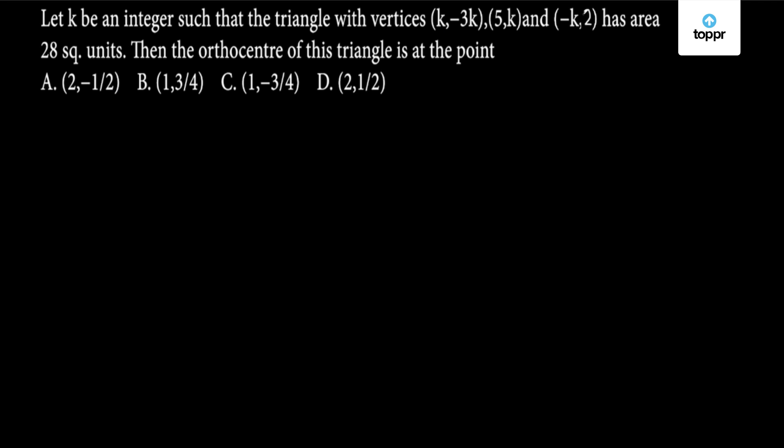The first step is to find the value of k. We'll make use of the information that the area of the triangle with these three given vertices is 28 square units. The area is given by half the value of the determinant: k, -3k, 1 and 5, k, 1 and -k, 2, 1 as the three rows. This value is given as 28.